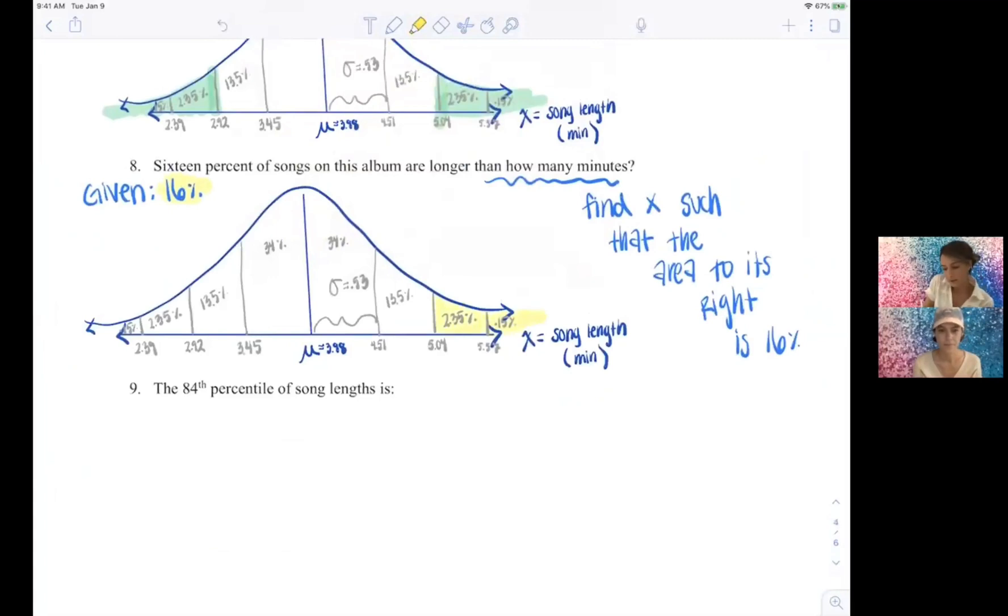But if we add 13.5 percent, okay, so now we're at 16, actually exactly, right. So all of this is our area of 16. So the x-value that marks that off? 4.51. Yeah, okay, so a percentile is an x-value, a boundary, such that that percent of the data is below it.